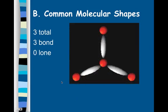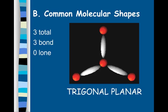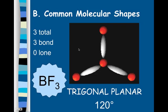Another common shape is trigonal planar. This shape is flat. There are three bonding pairs total and zero lone pairs. The bond angle between all three is 120 degrees. An example of that is boron trifluoride, BF₃.